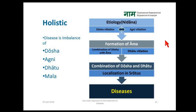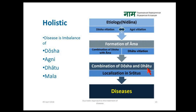The etiology of a disease leads to Dosha vitiation and Agni vitiation. When Dosha and Agni are vitiated, it leads to the formation of Ama. The combination of Dosha with Ama leads to Sama Dosha, which then combines with Dhatu. These together localize in Srotas, and according to which Srotas is affected, different diseases are produced in the body.